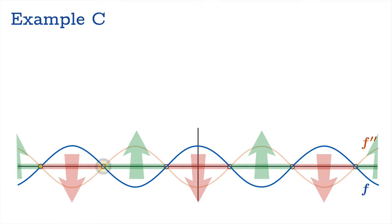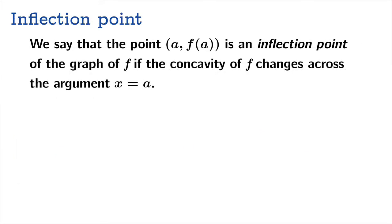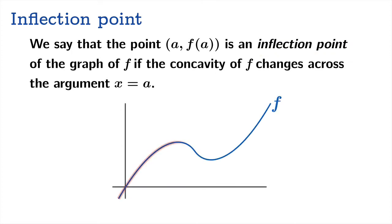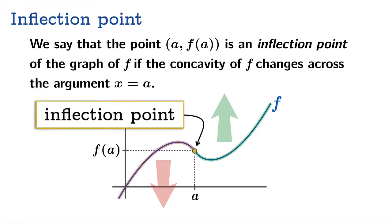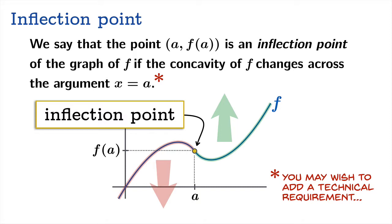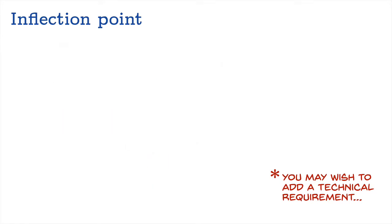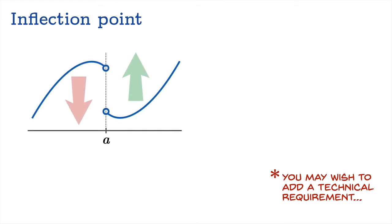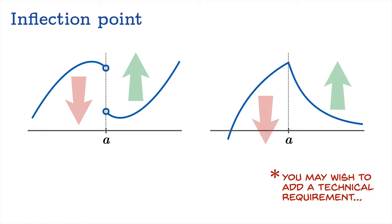The points at which concavity changes are known as points of inflection. We say that the point (a, f(a)) is an inflection point if the concavity of f changes across x = a. However, we may wish to add technical requirements. Just saying the concavity changes might not be enough — for example, the graph might be discontinuous at a, or continuous but not differentiable at a. Depending on what you want your definition to entail, you may require continuity or differentiability as well.